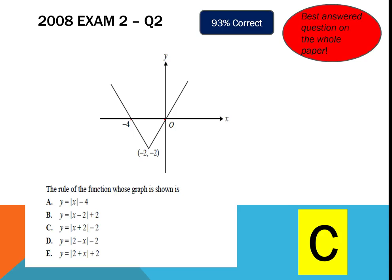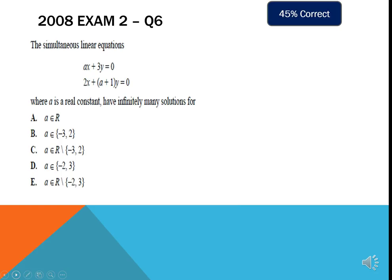For an absolute value function, the basic graph has a cusp at (0, 0). Here the cusp is at (negative 2, negative 2), meaning two units left and two units down. Looking for minus two at the end eliminates three options immediately, leaving C and D. Movement to the left comes from x plus 2 inside the bracket, so C is the answer. You can verify by substituting x equals 0 and x equals negative 4 to check that y equals 0 in both cases.